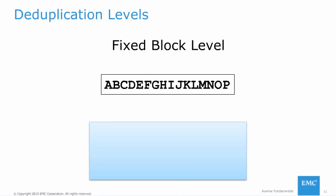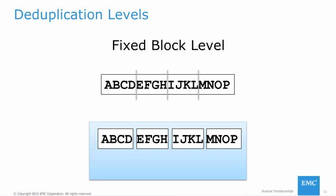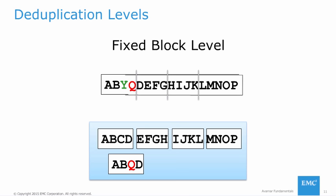With fixed block level deduplication, each file is first broken into equal-length blocks of data. These individual blocks are backed up and stored, and the backup server keeps track of how to reassemble the file in the event of a restore. With this level of deduplication, only changed blocks need to be stored—if there is a change in one bit of a large file, only the block containing that bit is stored. However, fixed block level deduplication has an inefficiency when data is inserted into or deleted from a file. Inserting or deleting data causes a shift in all the data after the point of insertion or deletion, causing all blocks after that point to be different. So a small insertion of data near the beginning of a file can cause the entire file to be backed up and stored again.